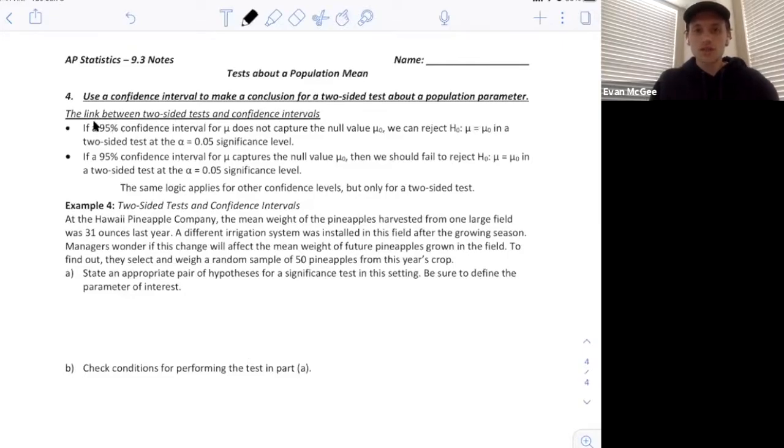A 95% confidence interval relates to a significance level of 0.05. A 99% confidence interval relates to a 1% significance level, and a 90% confidence level relates to a 10% significance level.